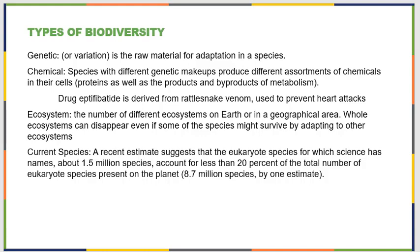Ecosystem diversity references the number of different ecosystems on Earth or within a given geographical area. Whole ecosystems are disappearing in some cases, and while certain species can move and adapt, that's really not always possible. When we look at current species diversity, a recent estimate suggests that the eukaryotic species we've named — about 1.5 million of them — accounts for less than 20% of the total number of species on our planet. So we might be losing certain groups and not even know it yet because we haven't given them a name.